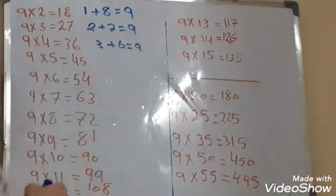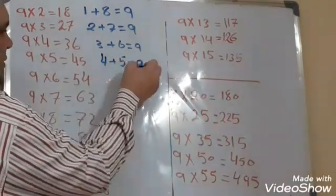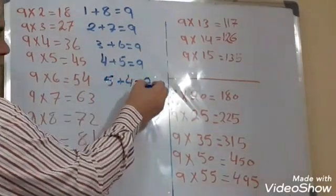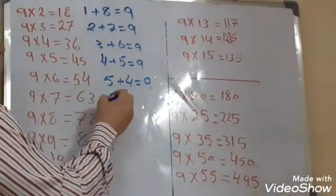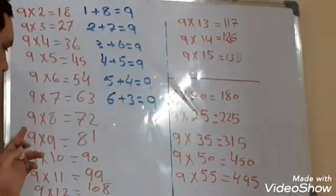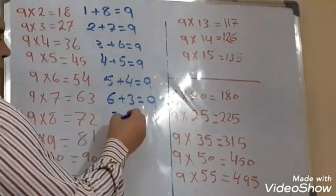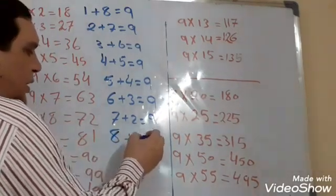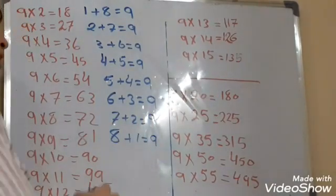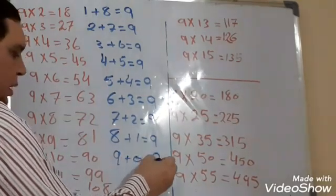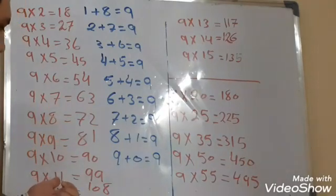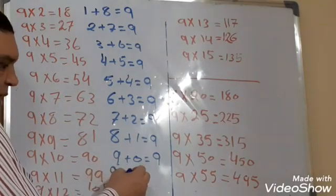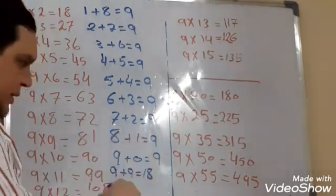Nine times five equals 45 — 4 plus 5 equals nine. Nine times six equals 54 — 5 plus 4 equals nine. Nine times eight equals 72 — 7 plus 2 equals nine. Nine times nine equals 81 — 8 plus 1 equals nine. If we add 9 plus 9 we get 18, and 1 plus 8 equals also nine.